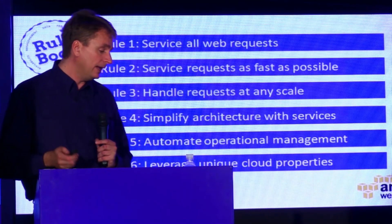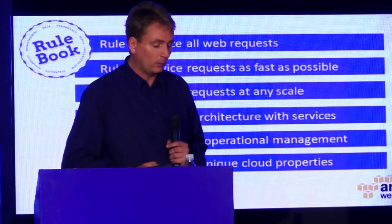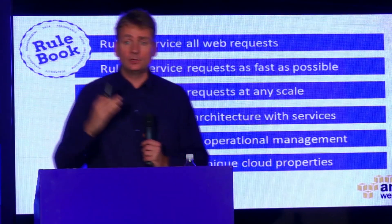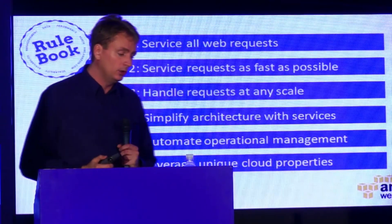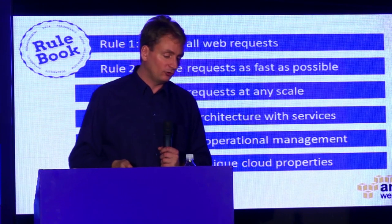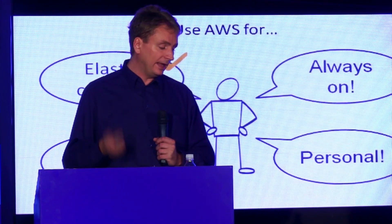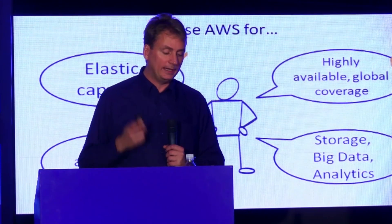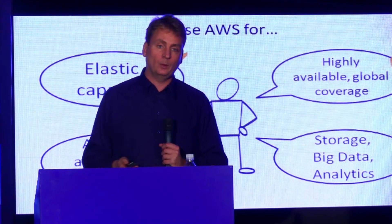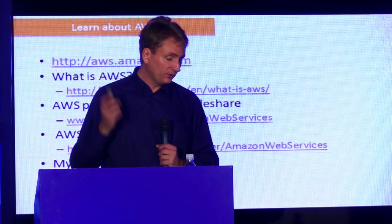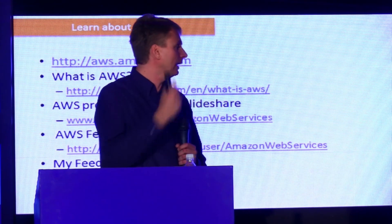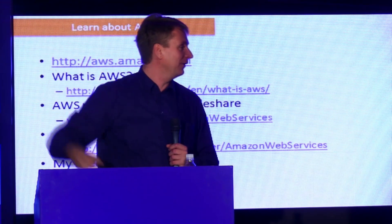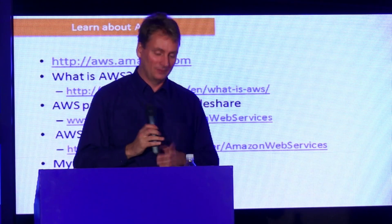So that was my rulebook: service all web requests — be available, be fast, be scalable; don't deal with standard stuff that doesn't add to your business value; automate everything; and leverage unique cloud properties. In the end you get elastic capacity, high availability, automated operations, and fast storage and big data analytics. Some resources and the presentation will be downloadable. Thank you — I'll be in the green area after the session if you want to meet me.